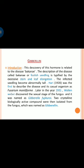The discovery of gibberellin is related to the disease bakanae, described as 'foolish seedling disease', typified by excessive stem and leaf elongation — the infected seedlings become abnormally tall. Hori was the first to describe the disease and its causal organism. Later, in 1931, Yabuta discovered the sexual stage of the fungus, which was named Gibberella fujikuroi. Two crystalline biologically active compounds were then isolated from the fungus and named gibberellins.